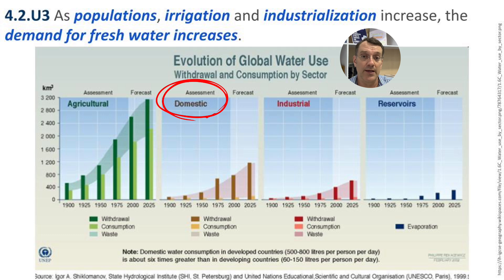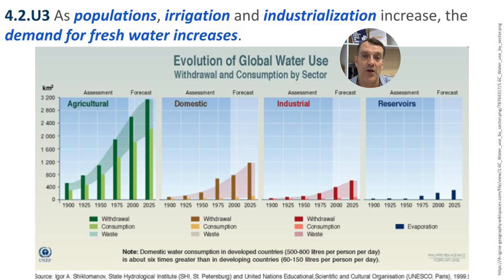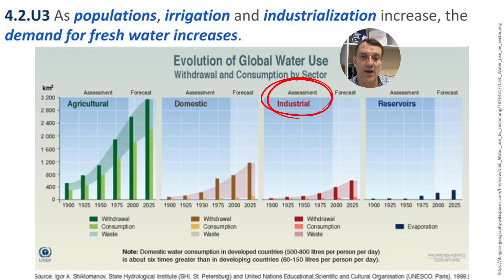For domestic uses — cooking and bathing predominantly — as the population grows we're cooking and bathing more people, which is a clear connection. But as people become wealthier they tend to live in bigger houses, use more water for cleaning, do more laundry, and buy things like dishwashers and laundry machines that use more water than doing those chores by hand. So as people become wealthier, their per capita domestic water consumption increases as well. For industrial purposes, as the human population grows there is more industry to meet consumer demands, and as humans become wealthier they buy more consumer products, leading to a further increase in industry.